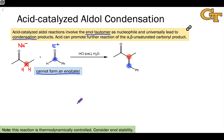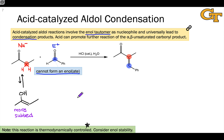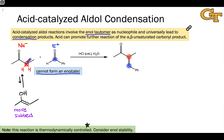Mechanistically, the first stage of this reaction involves tautomerization of the nucleophilic partner to form an enol intermediate. This reaction is thermodynamically controlled — typically run at elevated temperatures with catalytic amounts of acid that encourage formation of the thermodynamic product, which is derived from the more substituted and therefore more stable enol tautomer, involving enolization at the alpha carbon in the ethyl group rather than the methyl group.